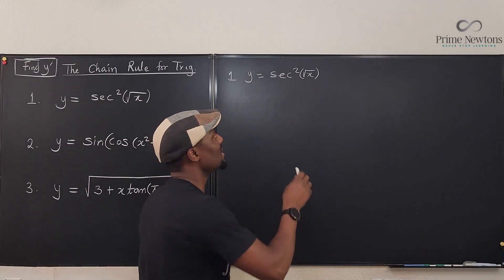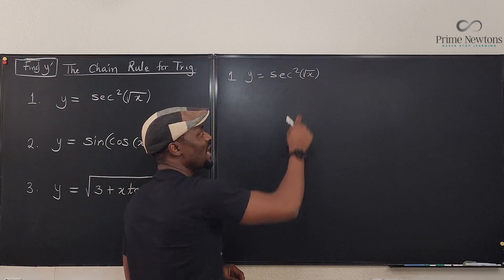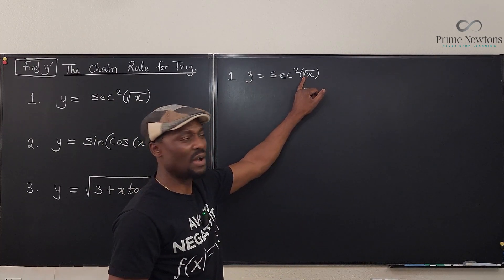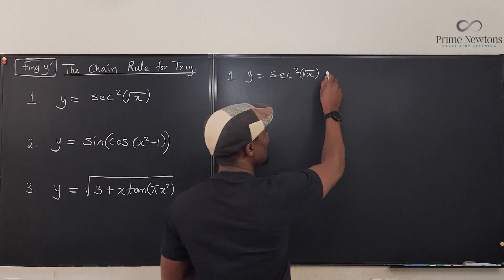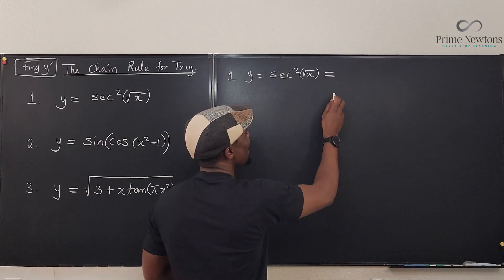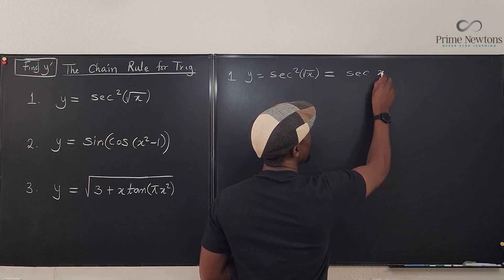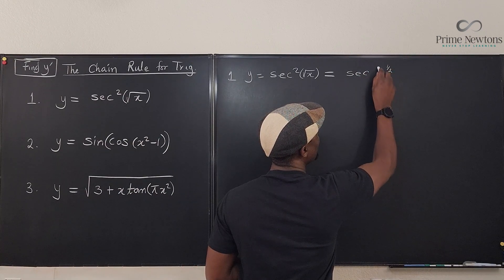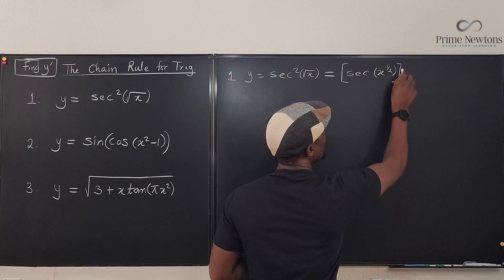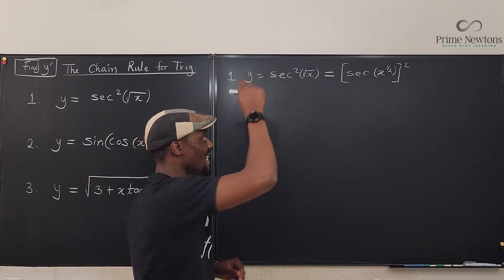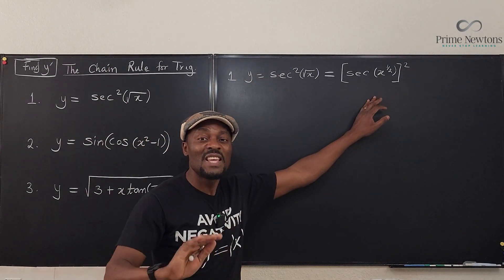What I would do is — I know that secant squared — I can rewrite this. So what I'm going to do is write this as secant of x raised to the power one half, and then everything squared. That is the meaning of this expression. If you can get this, then you can start.